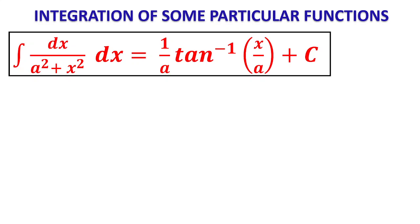If it is ∫dx/(a² + x²), it equals (1/a)tan⁻¹(x/a). How to remember it: if it is a² + x², this is obtained by putting x = a·tan(θ), so dx = a·sec²(θ)dθ. Therefore the integration gives (1/a)tan⁻¹(x/a).